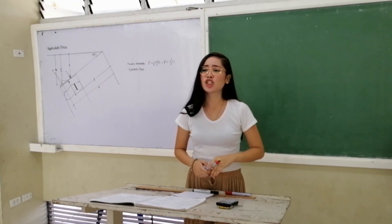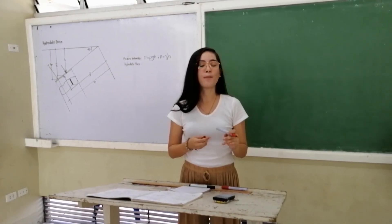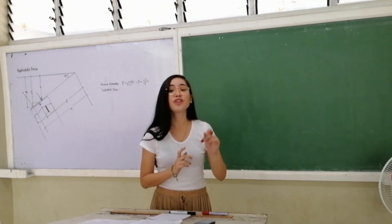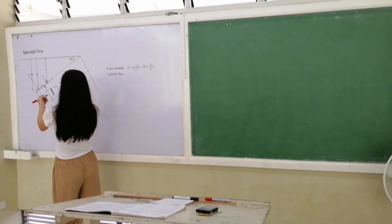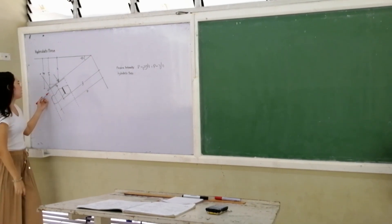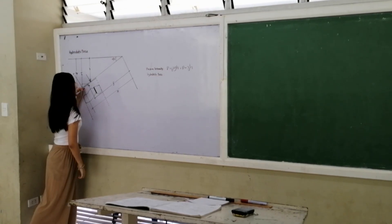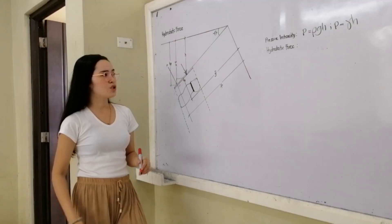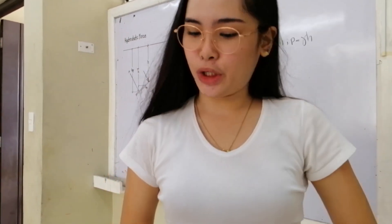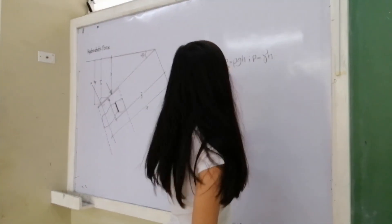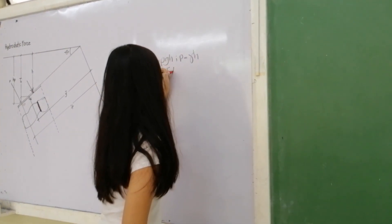Let us assume that the forces act on some point — that is the center of pressure. We have also the hydrostatic force formula, which is: force is equal to unit weight times h-bar times area.